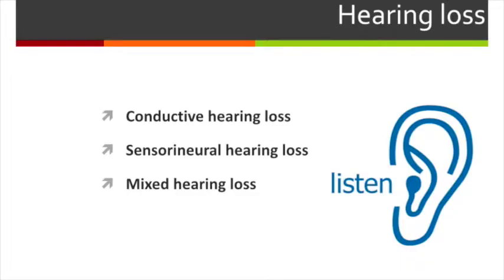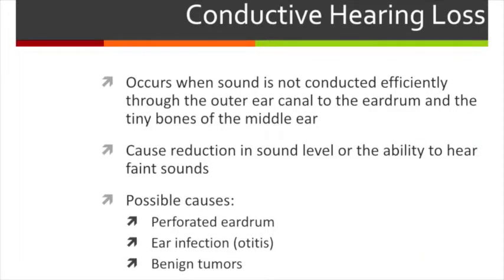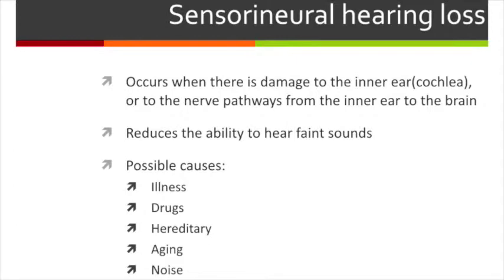Now we know how the auditory system works, let's talk about hearing loss. The common hearing loss can be divided into three types: conductive hearing loss, sensorineural hearing loss, and mixed hearing loss. Conductive hearing loss occurs when sound is not conducted efficiently through the outer ear canal to the eardrum and the tiny bones of the middle ear, causing a reduction in the ability to hear faint sounds. Sensorineural hearing loss occurs when there is damage to the inner ear or the neural pathways from the inner ear to the brain, also reducing the ability to hear faint sounds. Mixed hearing loss is a combination of both, damaging both the outer or middle ear and the inner ear or auditory nerve.